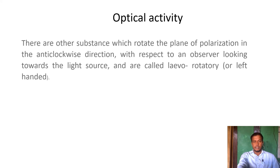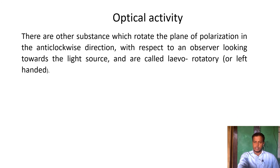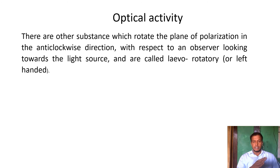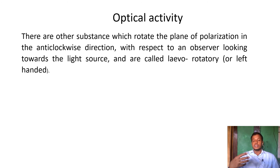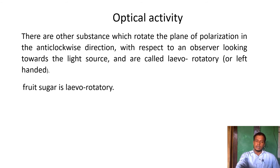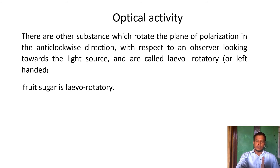Levorotatory substances rotate the plane of polarization in the anti-clockwise direction with respect to facing the light source. An example of a levorotatory substance is fruit sugar, which rotates the plane of polarization towards the left when viewing the source.